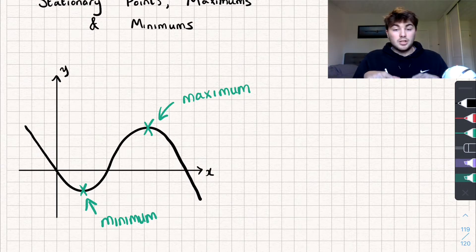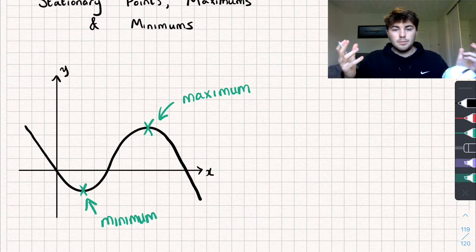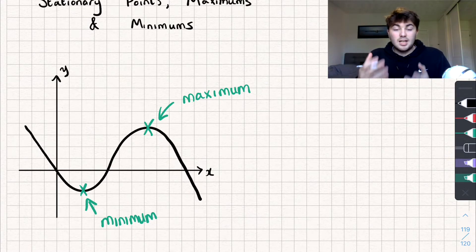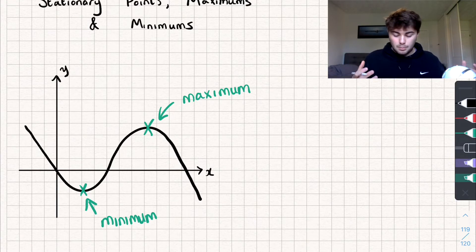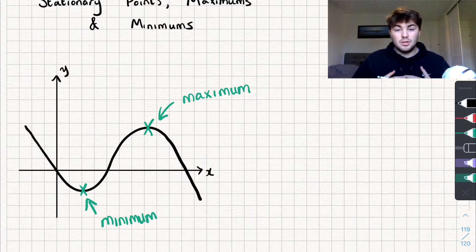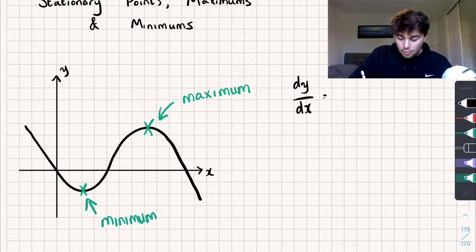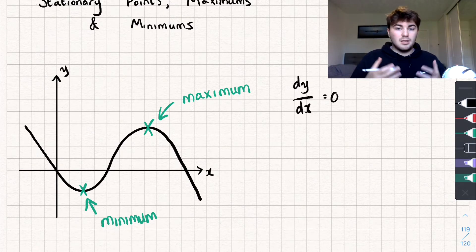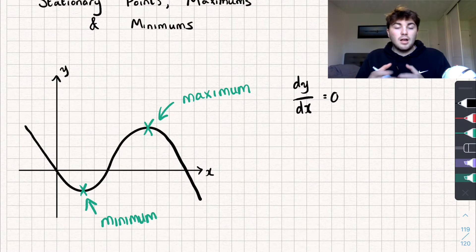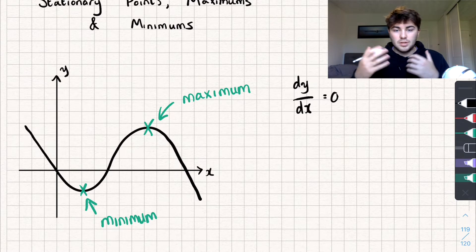Say we weren't given a nice graph like this — say we were just given an equation like y equals x cubed. How could we find the stationary points of the graph, and then how could we find if it's a minimum or a maximum? Well, to find where the stationary points are is quite easy. All we have to do is find the gradient by finding dy/dx, set that equal to zero, and then solve it to find values of x — those values of x are the coordinates of the stationary points.